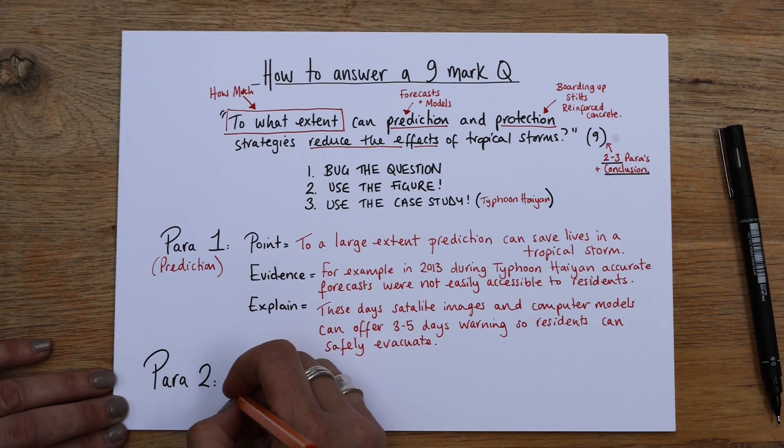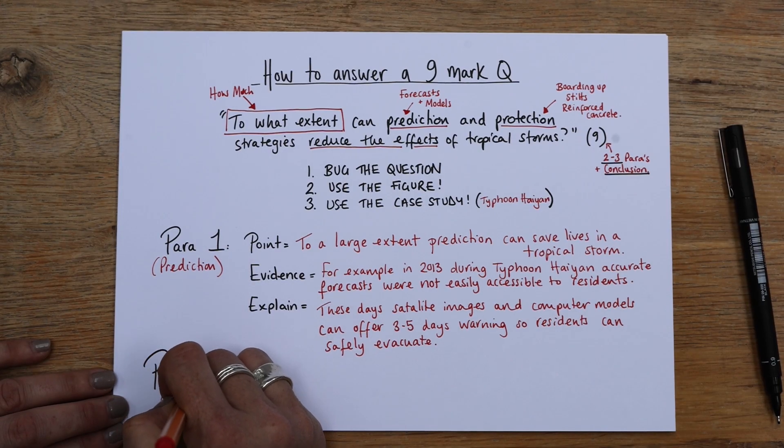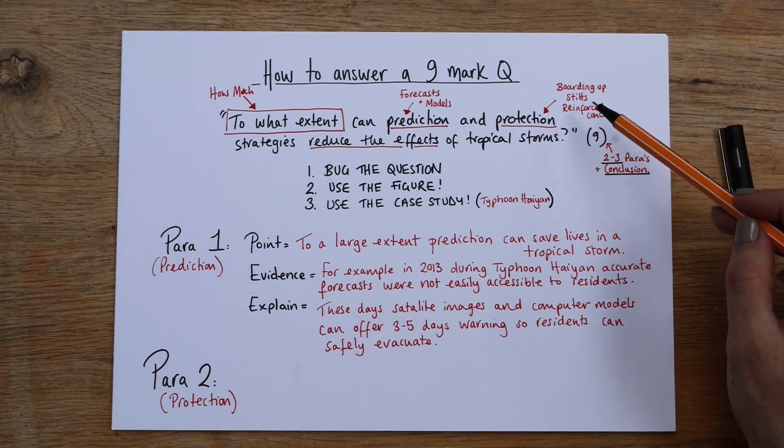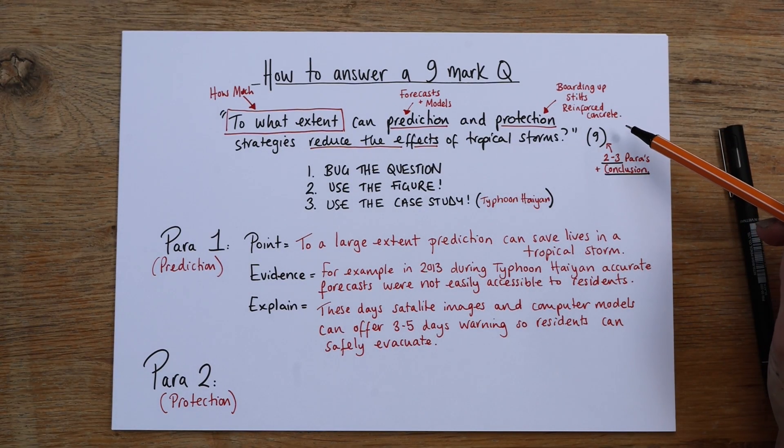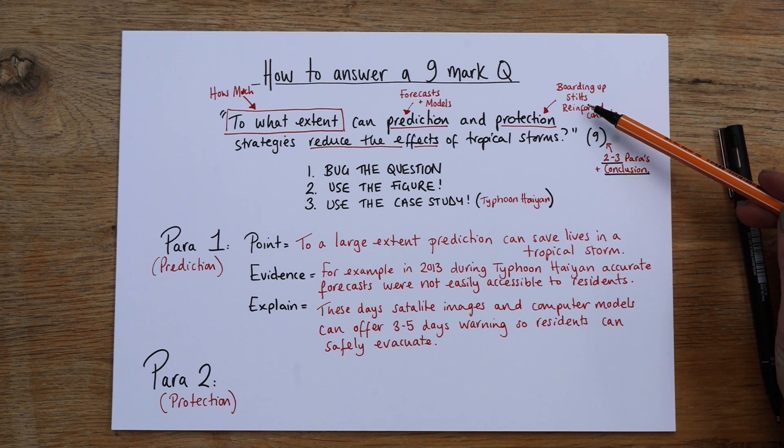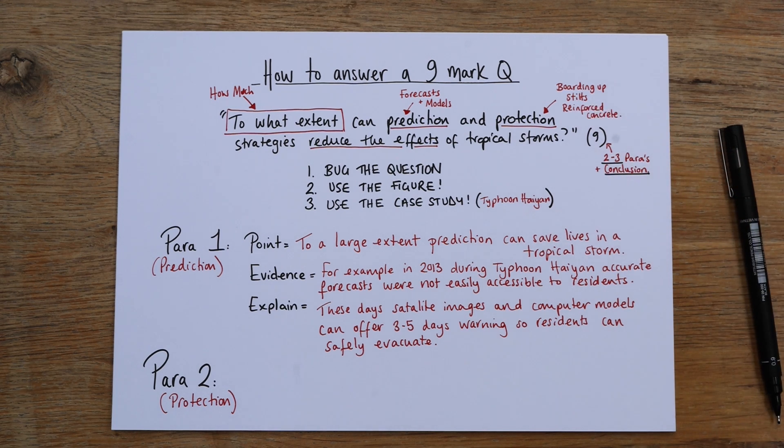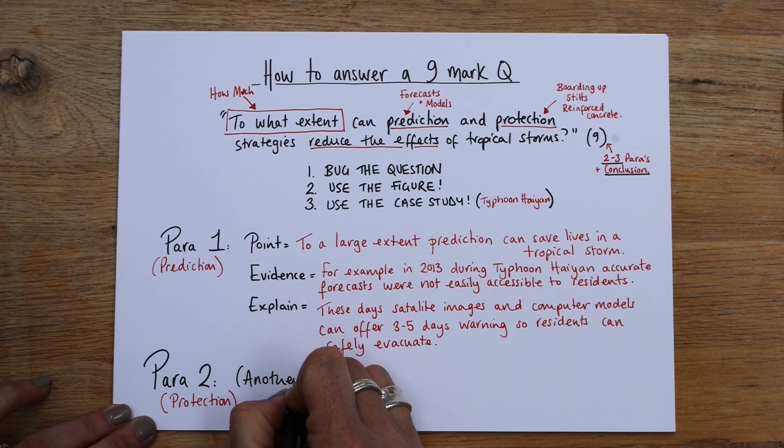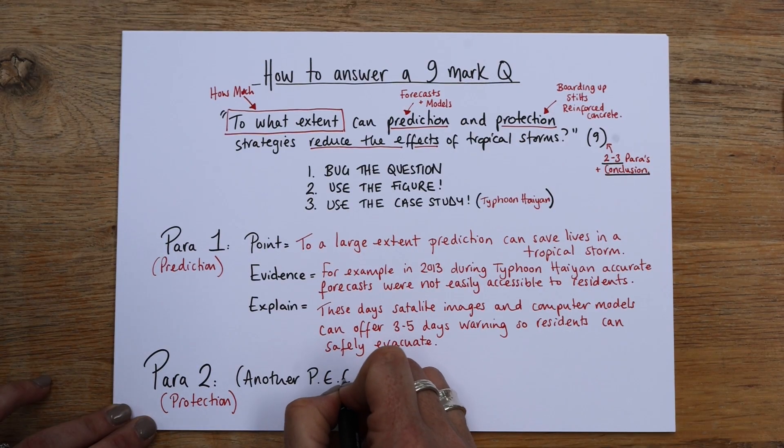We're going to need to start talking about protection. Cause that's the next word in that question. So let me write protection there. So you're going to start talking about, you know, how important it can be to have your building protected, things like boarding up windows so that glass doesn't break in the wind. So stilts, because you don't want the building to flood with all the storm surge and flood water, reinforced concrete, again, will hold the building up. So you want to do basically another point evidence explain there.